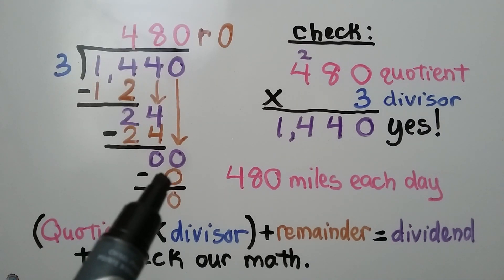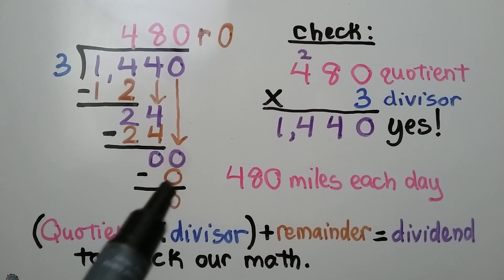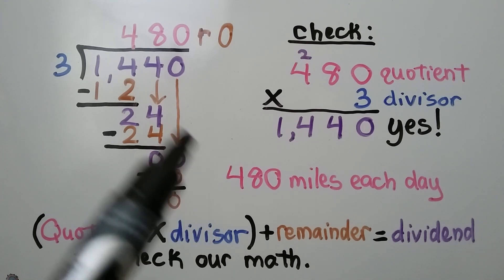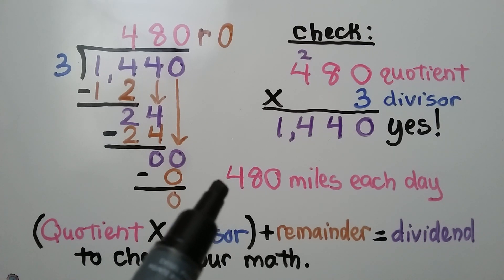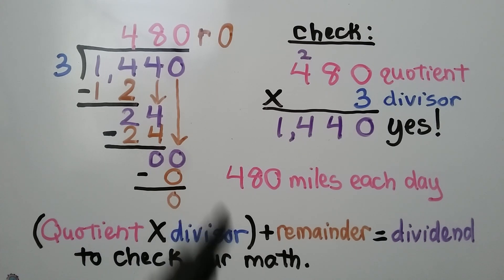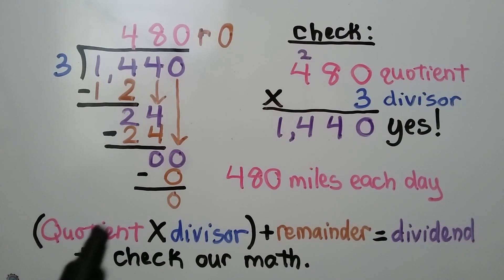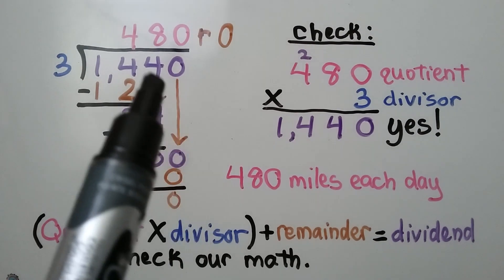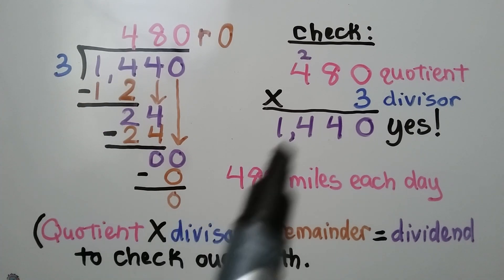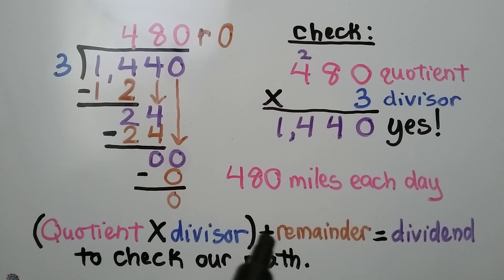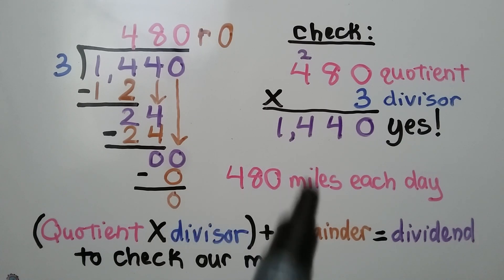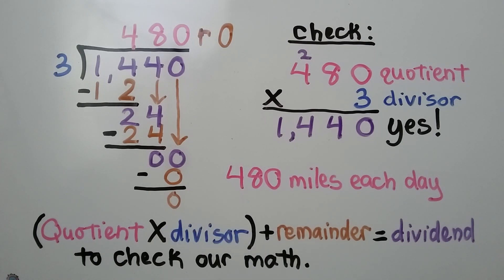3 times 0 is 0, and subtracting gives us 0. So the truck driver drove 480 miles each day for those 3 days. To check this, we multiply the quotient times the divisor: 480 times 3 equals 1,440. We add any remainder — which is 0 here — and it equals the dividend 1,440. That means we did our math correctly.